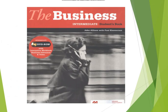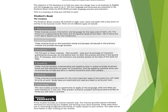The materials have been taken from 'The Business Intermediate Student's Book' by John Allison with Paul Anderson. The objective of this book is to help you learn two things: how to do business in English, and the language you need to do it. The new language and structures are presented in the student's book.